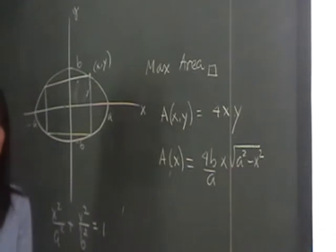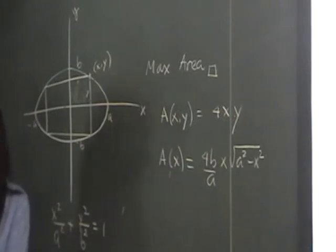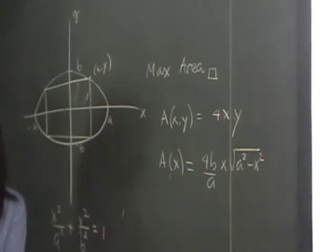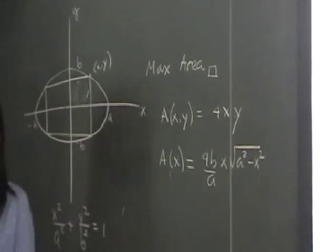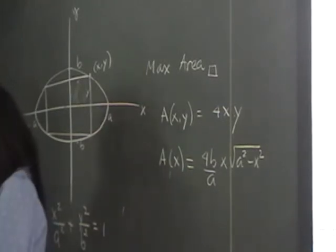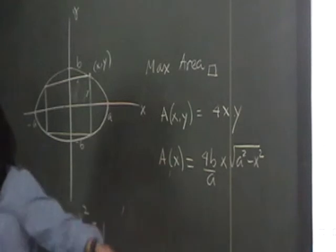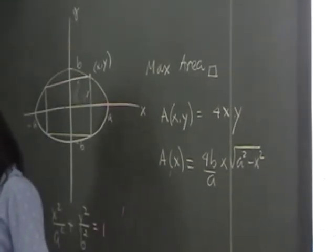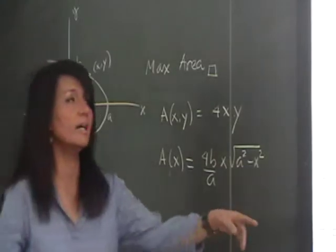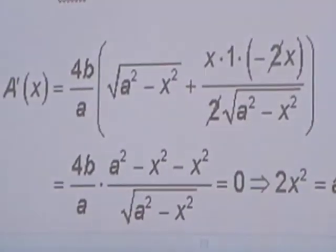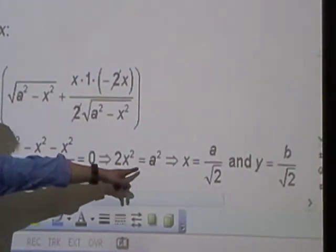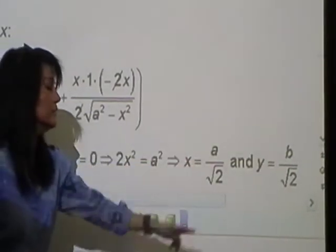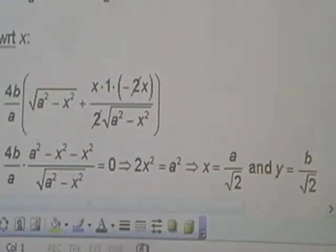Why do we differentiate with respect to X? WRT is with respect to X. So you know how to differentiate? Should we waste time differentiating or just need an answer? It's a product, right? When I differentiated, I got this using the product rule. You can do that at home. And then you get 2X squared equals A squared. So you get the answers. X is A over square root of 2, Y equals B over square root of 2.